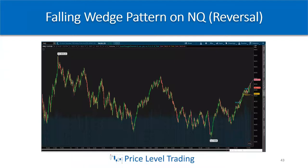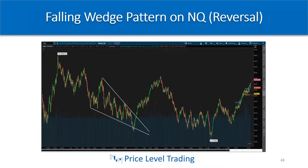Here's a falling wedge pattern on NQ as a reversal. Both trend lines are going down and converging toward each other. Eventually all the people shorting and shorting will run out, and people jump on the short train too late — those traders get trapped because we have an instant sharp reversal. As you can see, price breaks the downtrend. You can get in once that trend line is broken to be more aggressive, or wait for price to break above previous resistance and retest, getting in on the consolidation for the continuation move higher.